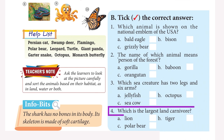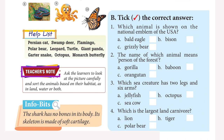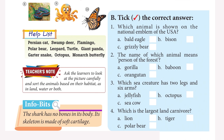Which is the largest land carnivore? Answer: Polar bear. Teacher's Note: Ask the learners to look at the picture carefully and sort the animals based on their habitat as land, water or both. Info Bits: The shark has no bones in its body — its skeleton is made of soft cartilage.